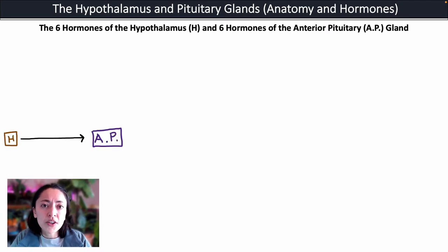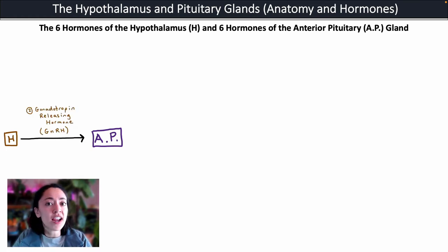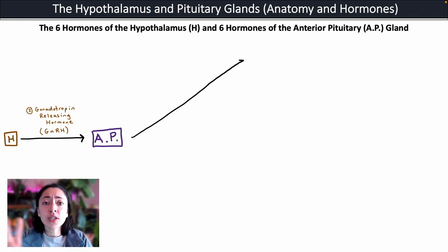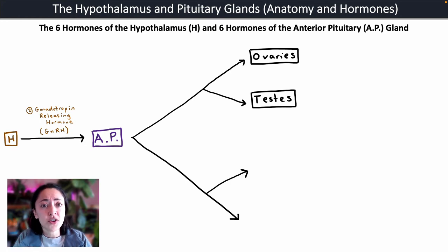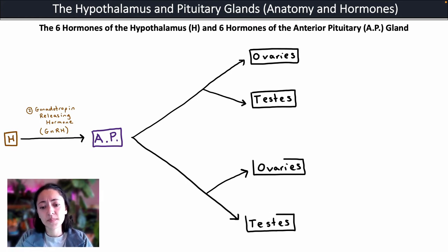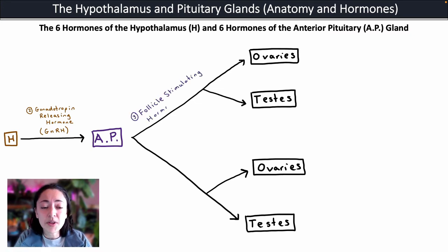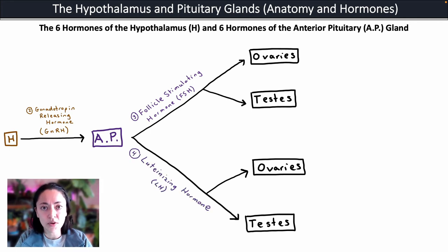The second hormone secreted by the hypothalamus is gonadotropin releasing hormone or GnRH, which will ultimately have an effect on the gonads. It causes the anterior pituitary gland to secrete two hormones that both target the gonads — in females the ovaries, and in males the testes. The first major gonadotropin is follicle stimulating hormone or FSH, and the second is luteinizing hormone or LH.